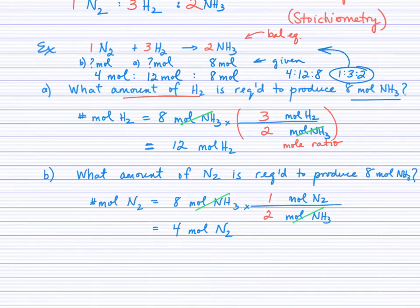When you have amounts in moles that follow the coefficients in the balanced equation, these are called stoichiometric amounts. Stoichiometric amounts are when reactants and products exist in the same ratio as the balancing coefficients. So 4:12:8 are the stoichiometric amounts for this reaction.